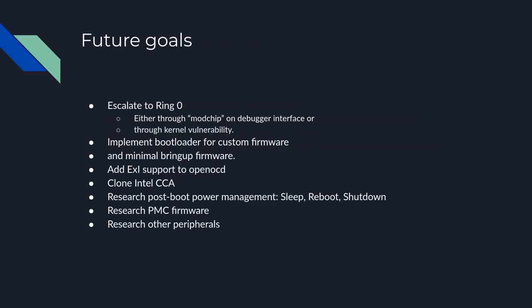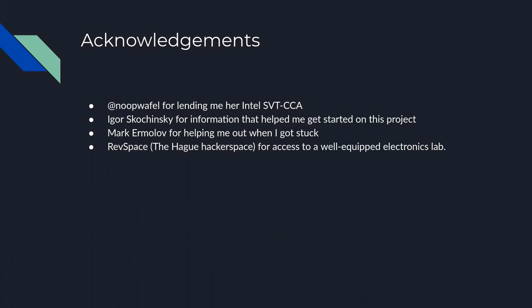Future goals: I really want to share this because if there's a way to escalate to ring zero through the ROP chain, you could start your own kernel on the ME and have custom firmware at least from the vulnerability on. You could also build a mod chip that uses the debugger interface to load new firmware. There's a lot of stuff still to be discovered, but I'm going to hang out at the open source firmware village because I really want to get started on open source ME firmware using this.